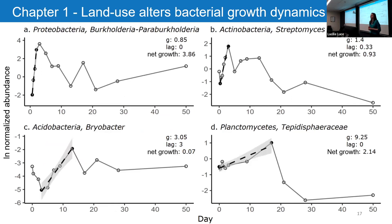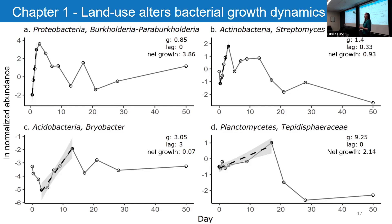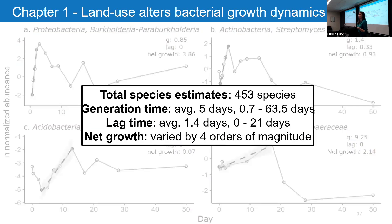These are four examples of species I found in these soils, showcasing the diversity we're looking at. Normalized abundance is on the y-axis, time on the x-axis, and the dashed line shows my growth estimate from the algorithm. The inset numbers show G — generation time, the number of days the population needs to double in size — lag, how many days it took for that population to start growing, and net growth, the difference in abundance at the beginning and end. Overall I got 453 species estimates; the average generation time was 5 days but ranged from less than a day to over 60 days; lag time averaged 1.5 days but ranged from zero to 21 days; and net growth varied by four orders of magnitude.